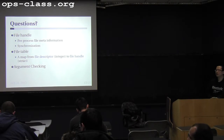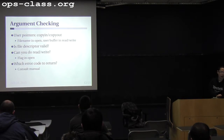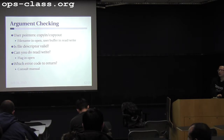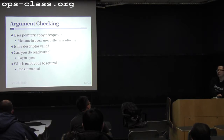Copyin and copyout — we covered this last time. It's essentially a memory copy with protection. You can imagine copyin/copyout has a try-catch block: try copying this data, but if something goes wrong, catch that exception and handle it.